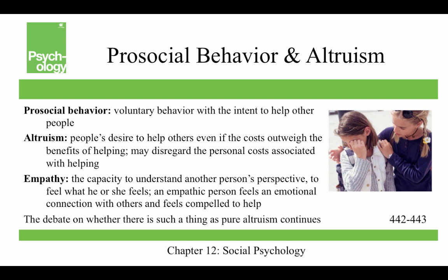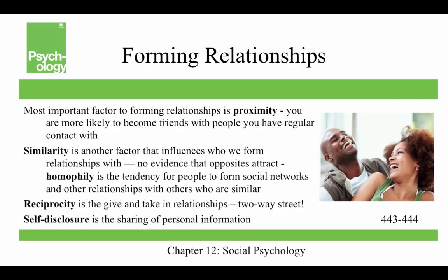Pro-social behavior is voluntary behavior with the intent to help other people. Altruism is a person's desire to help others even if the costs outweigh the benefits of helping — they may disregard the personal costs associated with helping. Empathy is the capacity to understand another person's perspective, to feel what he or she feels, and an empathic person feels an emotional connection with others and feels compelled to help. There is a debate, though, about whether there is such a thing as pure altruism, because some researchers think that when we help others, we're really actually helping ourselves at some level.